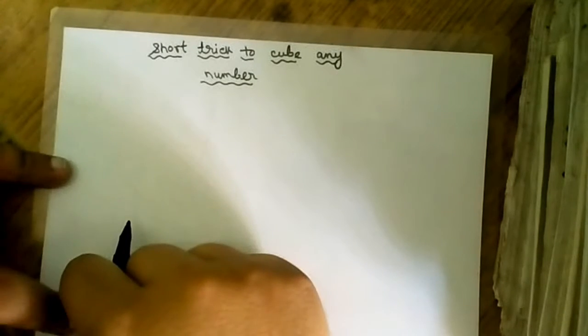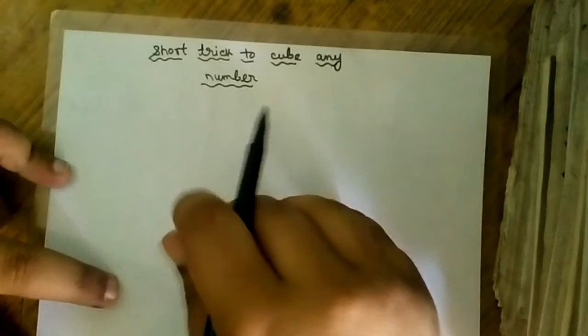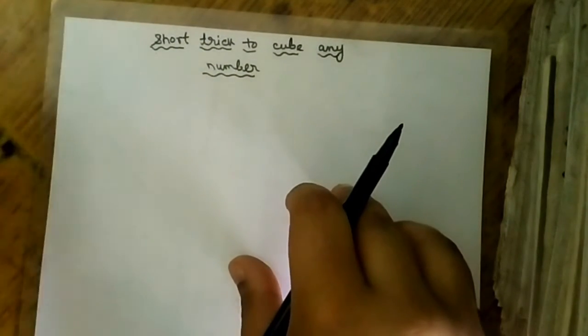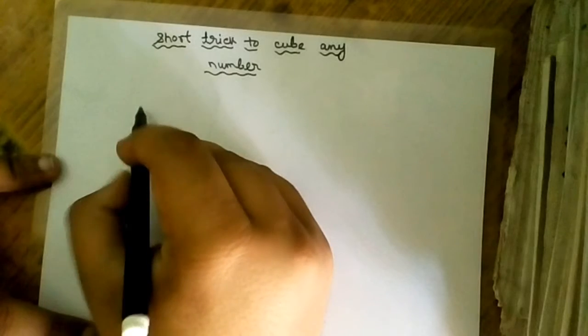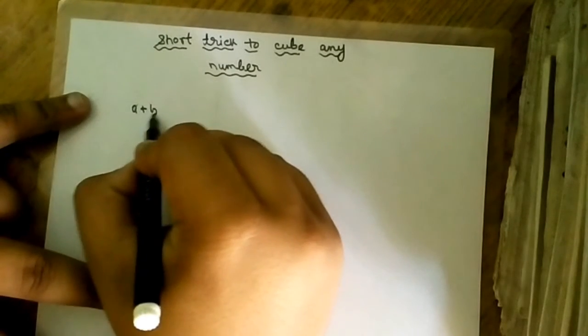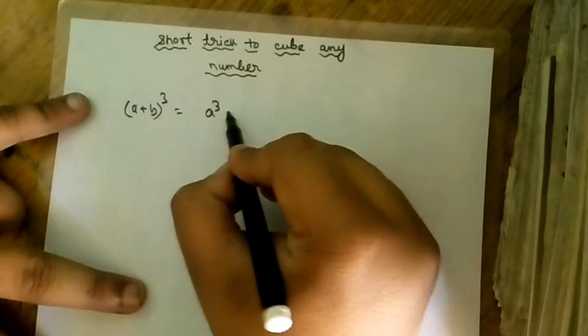Hello guys, this is Bankers Choice and you are watching short trick to cube any number. Okay, so let's begin the trick. We know that the formula of a plus b cube is equals to a cube plus